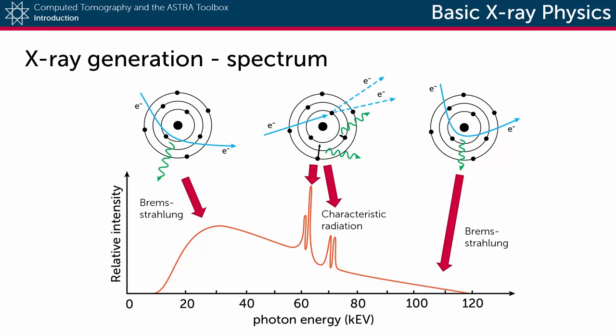With characteristic radiation the electron collides with an electron on the inner shell of the tungsten atom and kicks it out of its orbit. An electron on the outer shell then takes its place emitting an X-ray photon in the process. Its energy depends on the difference in binding energy of these two shells resulting in two typical peaks in the X-ray spectrum.